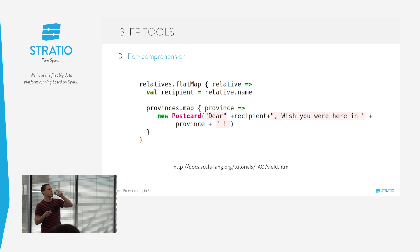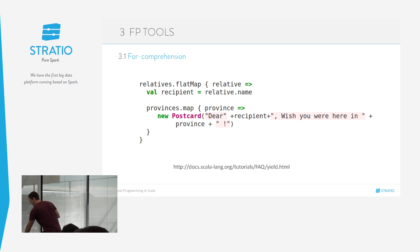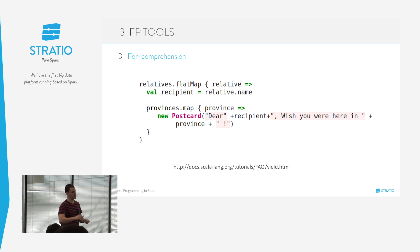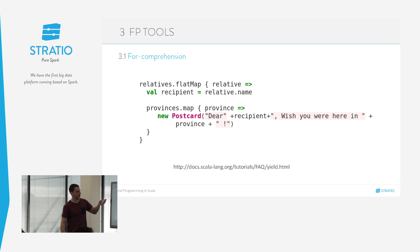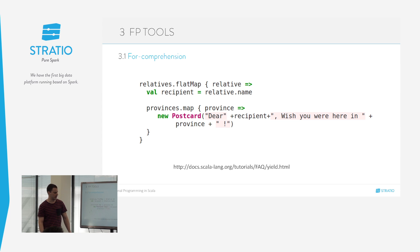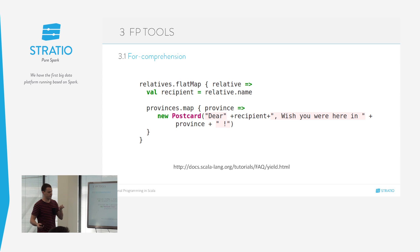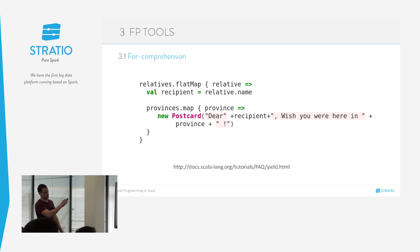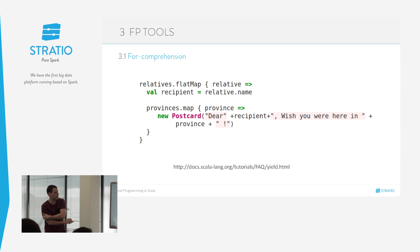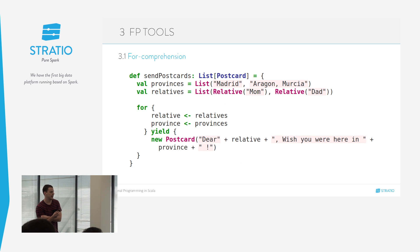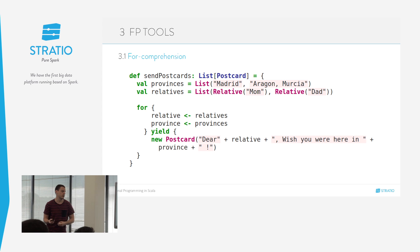¿Por qué os cuento este rollo cuando hemos empezado con for comprehension? Porque un for comprehension es exactamente esto — es azúcar sintáctico para map y flatMap. ¿Por qué crear una estructura para esto? Porque se pueden hacer muchas más cosas con el for comprehension. Imaginaros que metemos otro elemento más — los viajeros — y queremos mandar postales solo a los familiares que nos caigan bien.